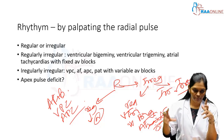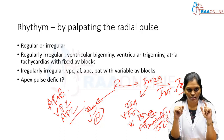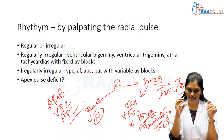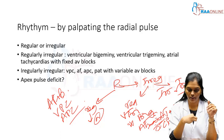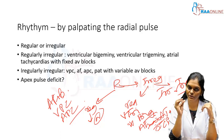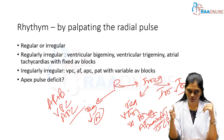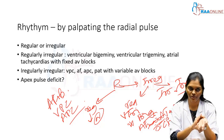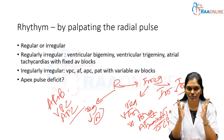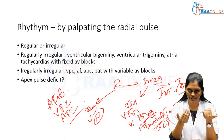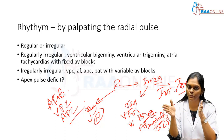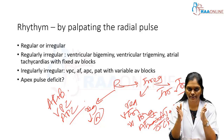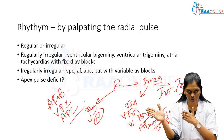For apex pulse deficit, two people are needed simultaneously. One person places the stethoscope at the apex of the heart and counts the heartbeats, while the other counts the pulse rate at the radial artery at the same time. If the difference between heart rate and pulse rate is less than 10, it is most likely a ventricular premature complex.